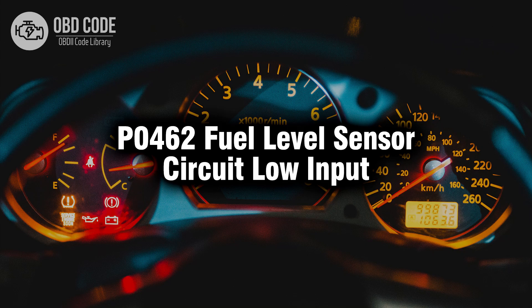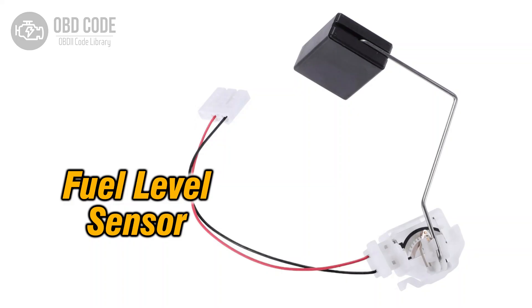Welcome. In this video we will talk about code P0462, its symptoms, causes and possible solutions. The P0462 trouble code indicates a low input signal from the fuel level sensor circuit. This sensor is critical for accurately measuring the fuel level in the tank and transmitting that data to the vehicle's engine control module.